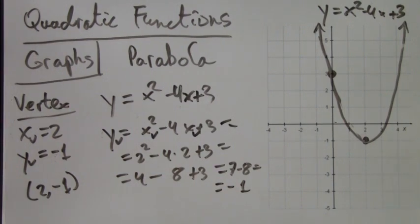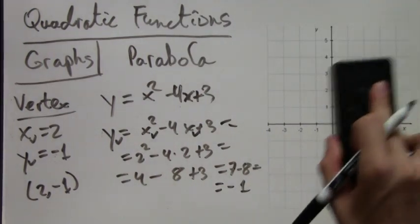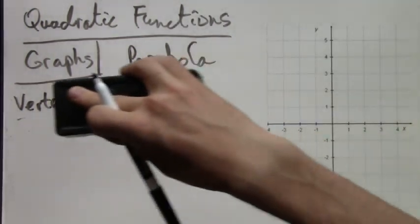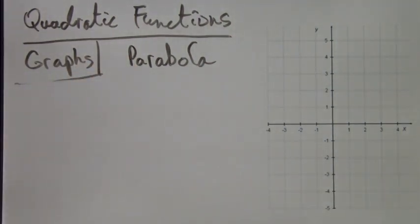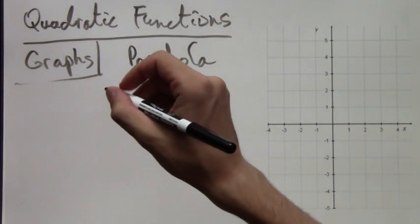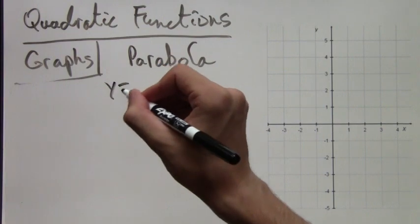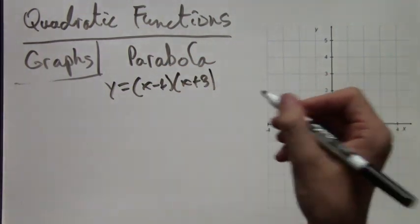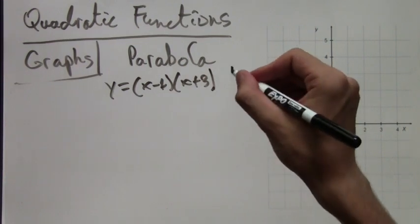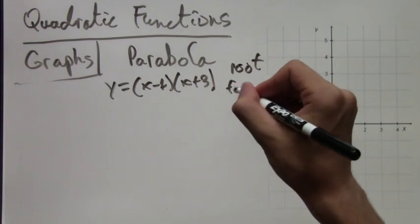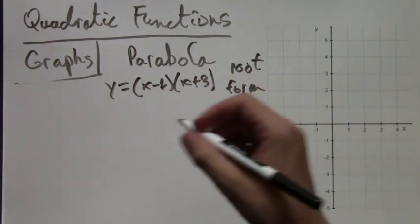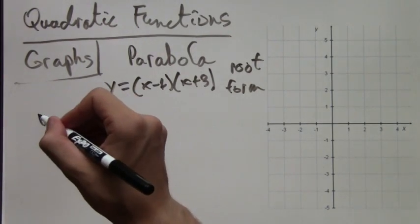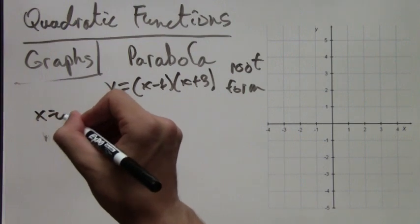That was in standard form. Now we're going to graph parabolas written in other forms: root form and vertex form. Let's take the example y equals (x - 1)(x + 3). This is the root form. We're going to do the same thing—find the y-intercept first by plugging in x equals 0.